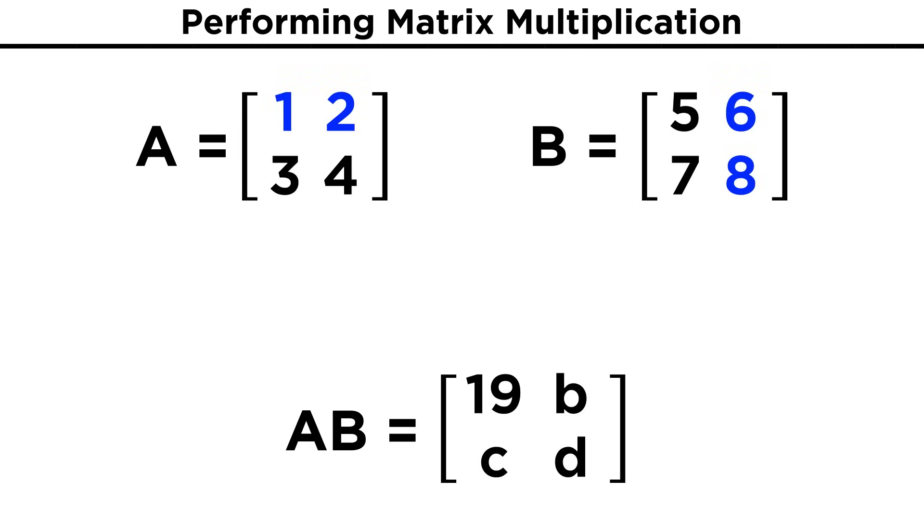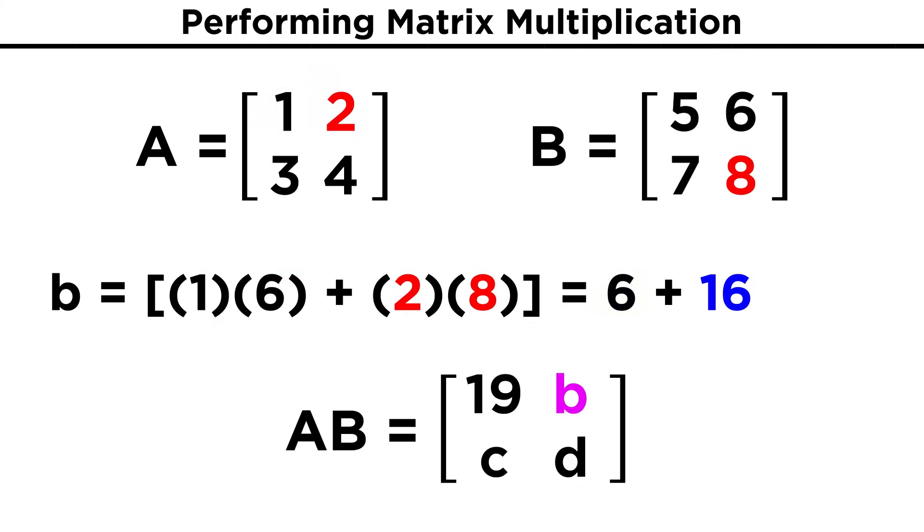Now we stay in the first row of this matrix but shift over to the second column of the other. One times six is six, and two times eight is sixteen. Six plus sixteen is twenty-two, and that will go in the second entry for the first row of the product matrix.